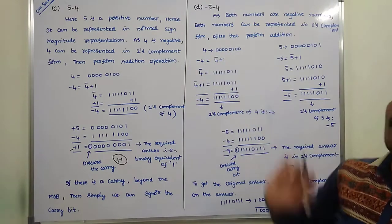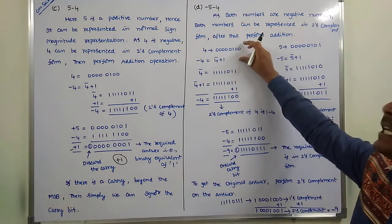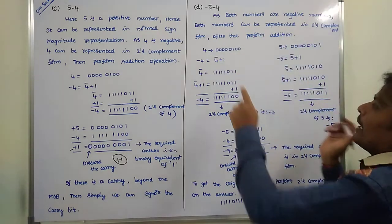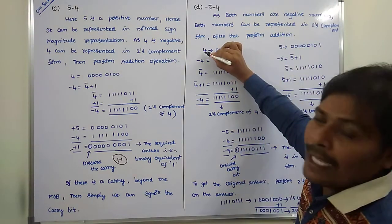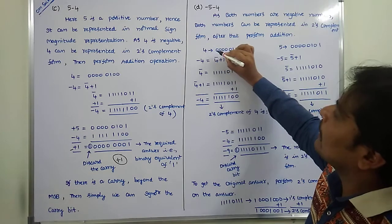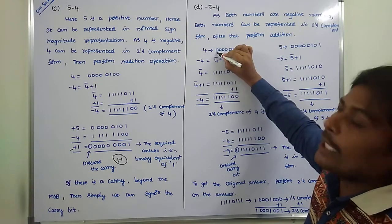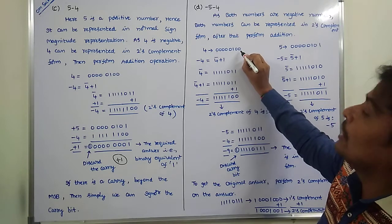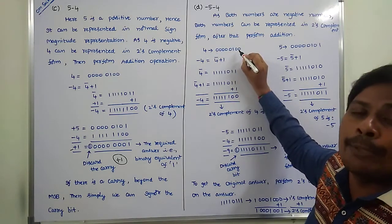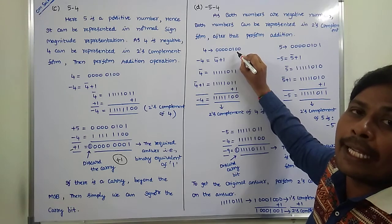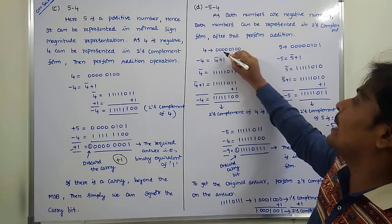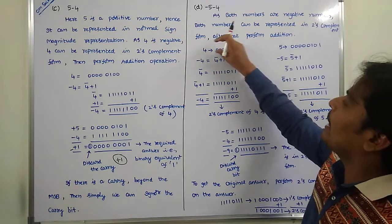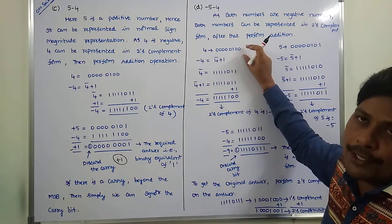First we take the binary form of 4 in the 8-bit register. Plus 4: the sign bit value is 0, and the binary form of 4 is 0100. This value is stored in the 8-bit register; any vacant bits are filled with 0. This is the binary form of 4 in the 8-bit register.